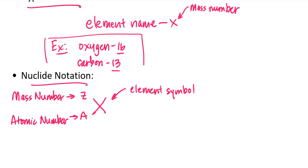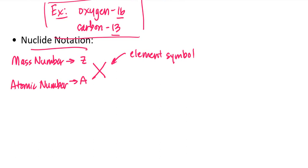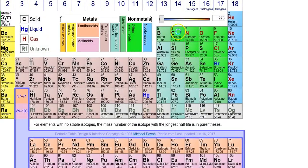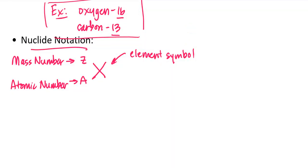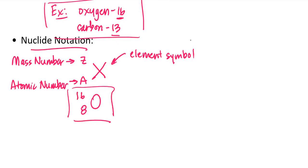Let's take the same examples written in hyphen notation and convert them to nuclide notation using a periodic table. Looking at oxygen, it has an atomic number of 8. So I'll use the symbol for oxygen, write 8 in the lower left since that's the atomic number, and from the hyphen notation I know the mass number is 16, so I write 16 in the upper left. That gives us the nuclide symbol for oxygen-16.